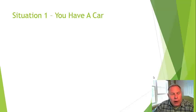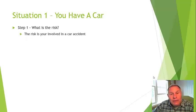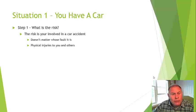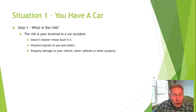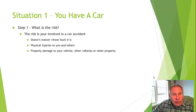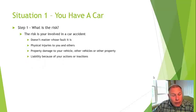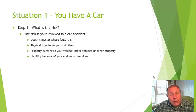First situation: you have a car. The risk is you're involved in a car accident. A lot of times it doesn't matter whose fault it is — you can have physical injuries resulting to you and to others, and property damage to your vehicle, other vehicles, or other property. You could run into a signpost, somebody's front yard, or run over somebody's bike. So there's property damage and physical injuries — distinguish between the two. And you could be held liable because of your actions or inactions.